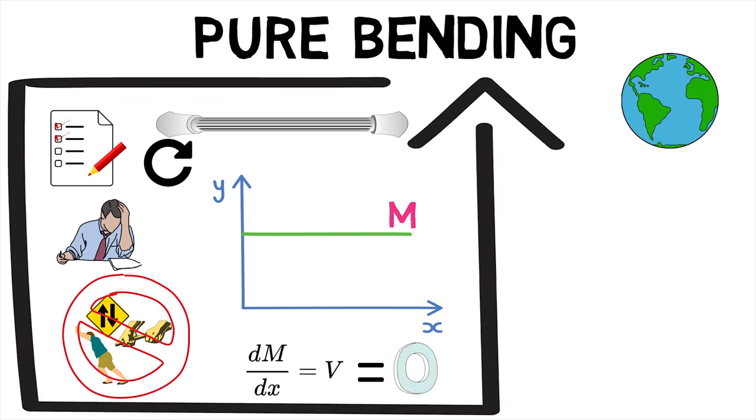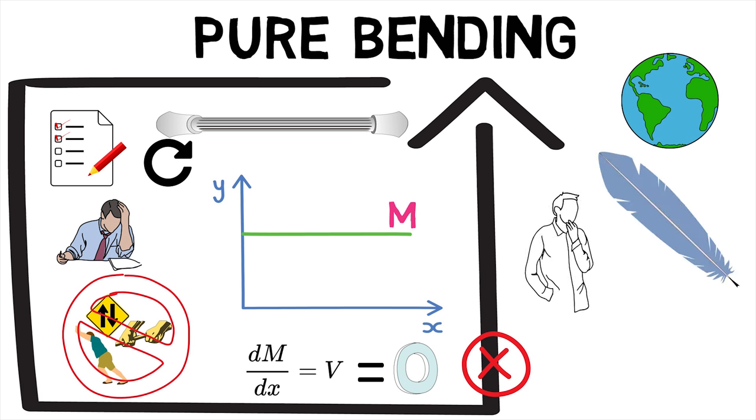In reality this state of pure bending does not exist because such a state needs an absolutely weightless member. The state of pure bending is an approximation made to derive formulas.